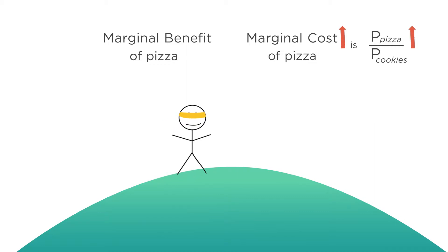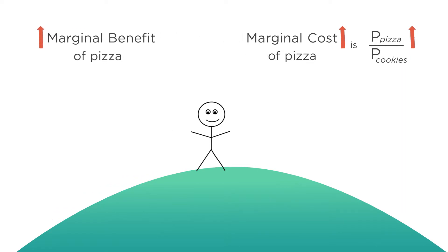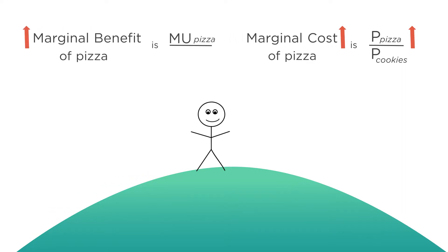We know that to be at the top of the hill, marginal cost must equal marginal benefit. Therefore, if the marginal cost of pizza is going up, then the marginal benefit of pizza must also increase — otherwise you won't be at the top of the hill anymore. The marginal benefit is the marginal utility of pizza relative to the marginal utility of cookies. So the marginal utility of pizza must rise compared to the marginal utility of cookies. And how do you increase the marginal utility of a good like pizza? You consume less of it.